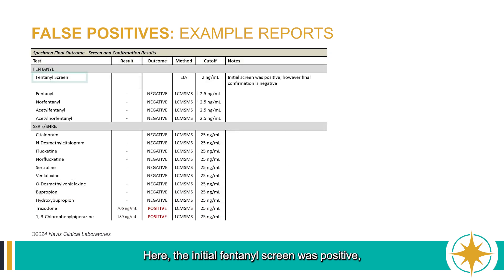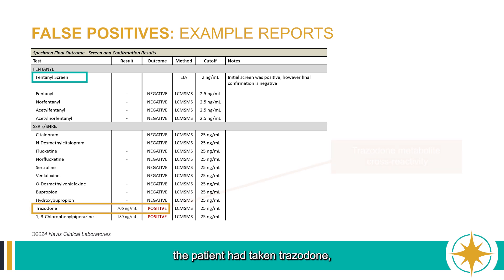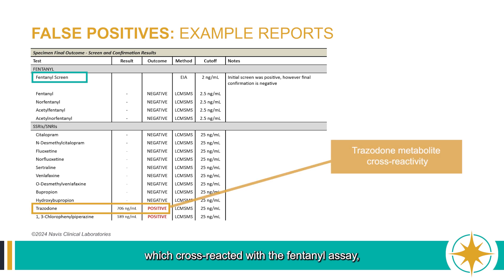Here, the initial fentanyl screen was positive. But we can see from the confirmatory results that the patient had taken trazodone, which cross-reacted with the fentanyl assay, producing a false positive result.